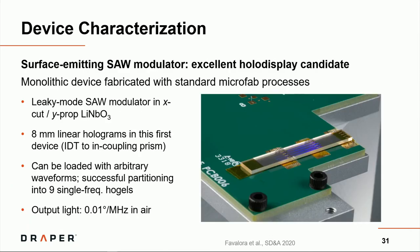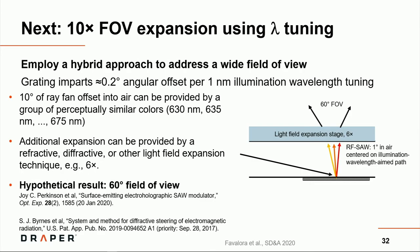To summarize the device characterization, we believe this is the first ever demonstration of a monolithic or one-piece surface emitting SAW modulator made using standard microfab techniques. The substrate was X-cut, Y-propagating lithium niobate. And we were able to load 8 millimeter long linear holograms into this first device. So it's nearly ready for tiling into an actual display.